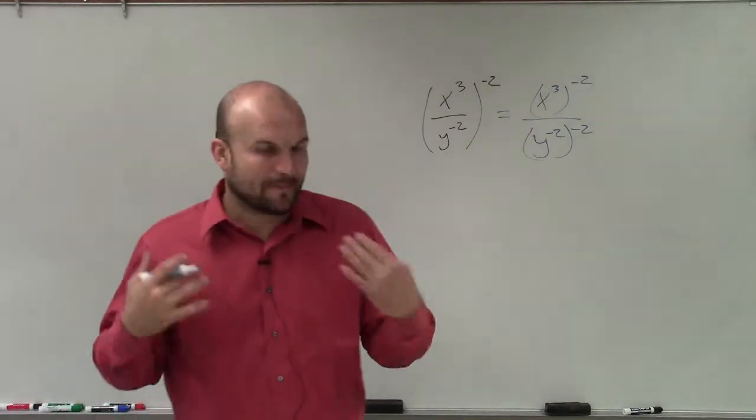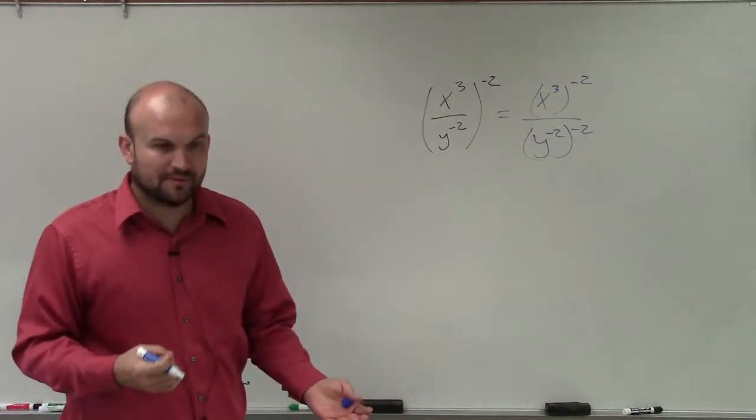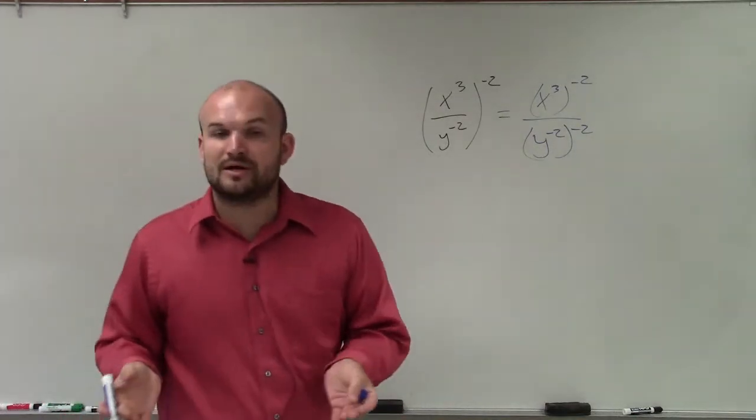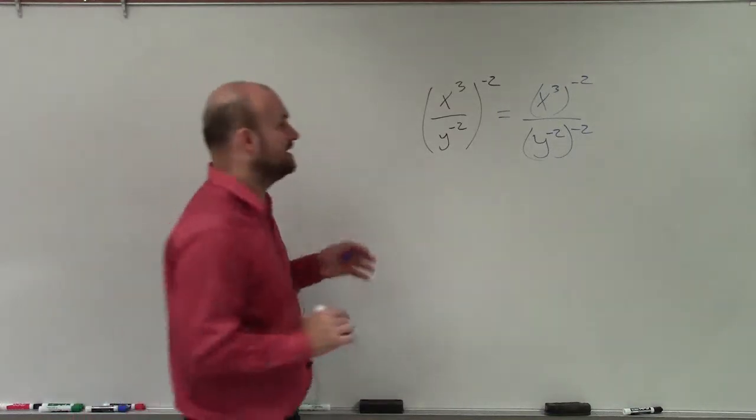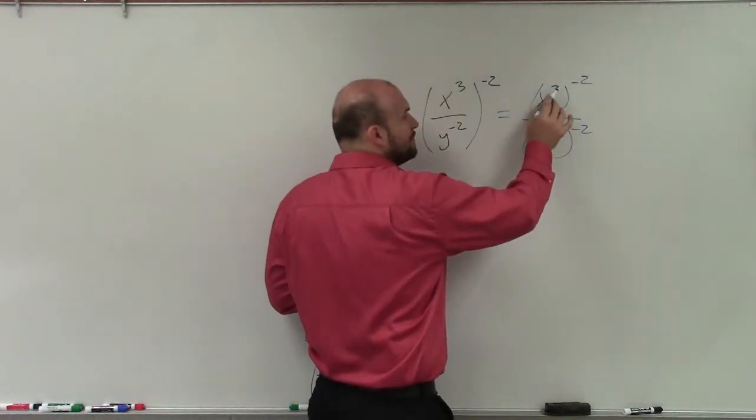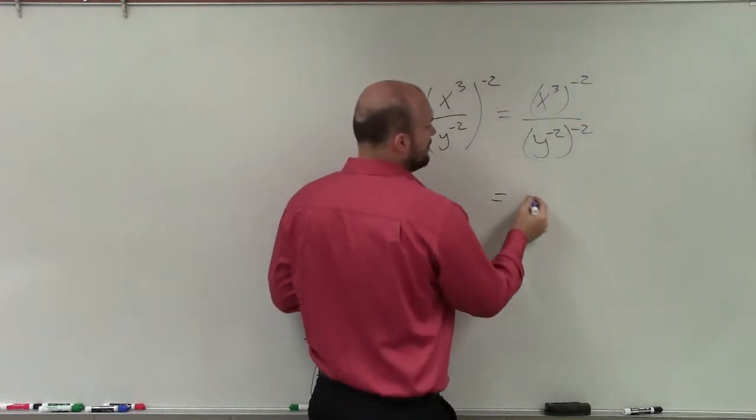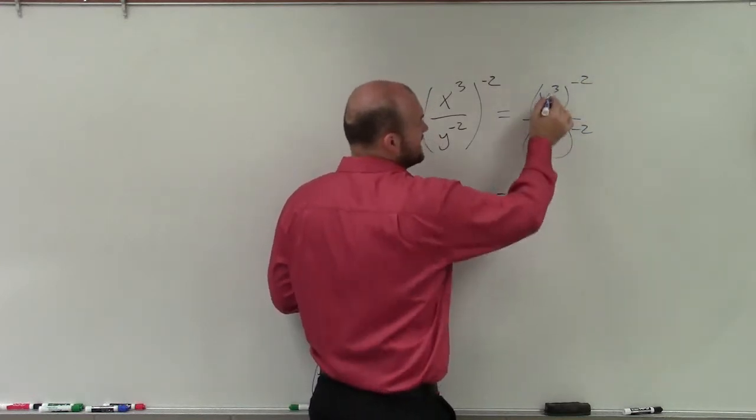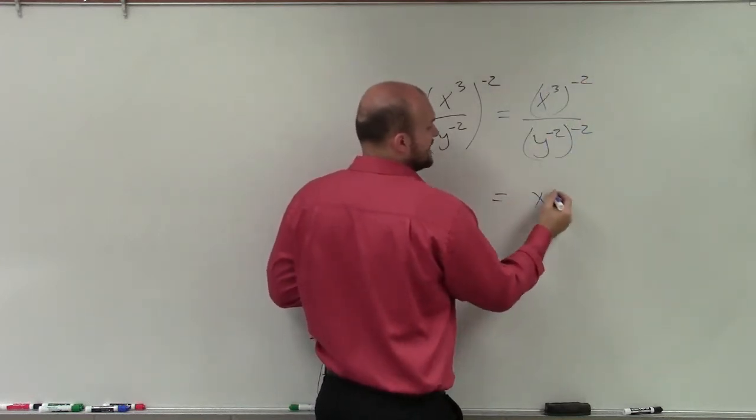Then what I would use is the power rule to determine what exactly my power is, and then get rid of negative exponents if I still have them. So remember, when you have a power to a power, you're going to multiply the terms. So this is x to the 3 times negative 2, which is negative 6.